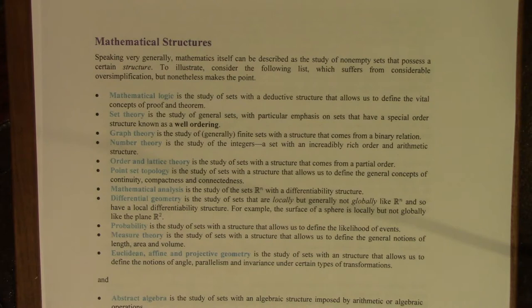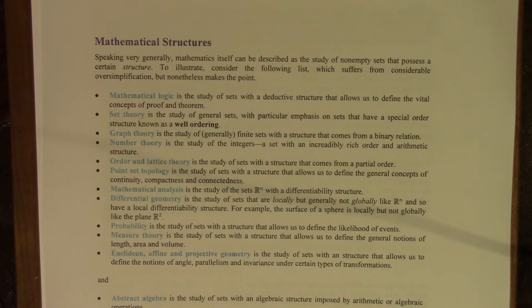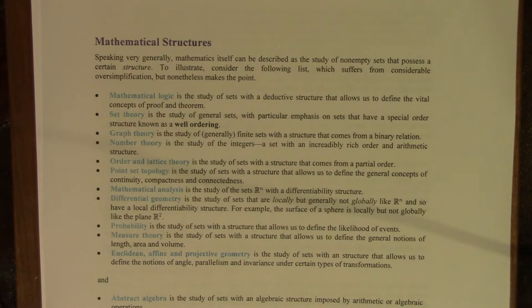Mathematical logic is the study of sets with a deductive structure that allows us to define the vital concepts of proof and theorem, as well as other ideas. Set theory is the study of general sets, but with a particular emphasis on sets that have a special order structure known as a well-ordering. Cardinal numbers are special types of ordinal numbers, which are special types of well-ordered sets, and a great deal of set theory is devoted to the study of both.